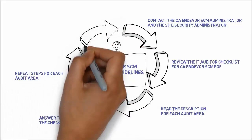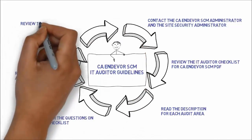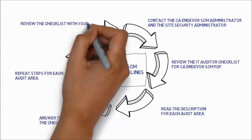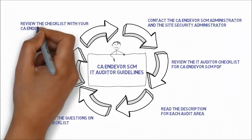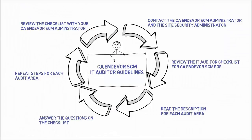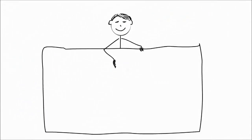Number six: after you have reviewed all the audit items in the checklist, go through the checklist with your CA Endeavor SCM administrator. Discuss with the administrator any differences between what you found and the settings and practices recommended in the checklist. Also discuss those questions in the checklist that you could not answer by reviewing the reports.